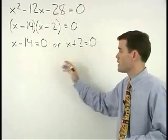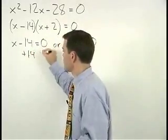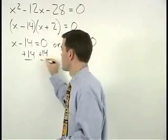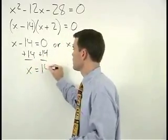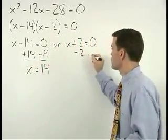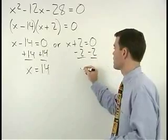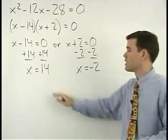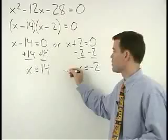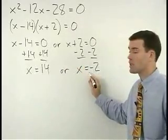Solving for x in each equation, add 14 to both sides on the left and x equals 14. Subtract 2 from both sides on the right, x equals negative 2. So x equals 14 or x equals negative 2.